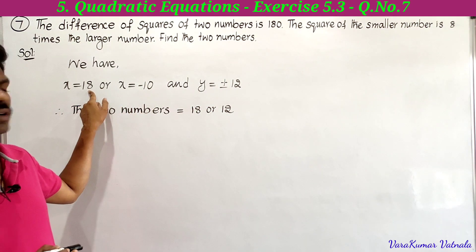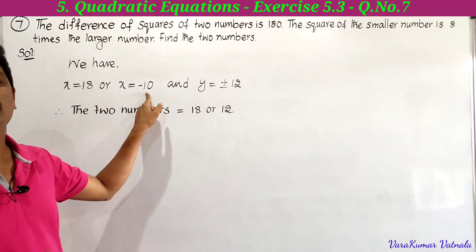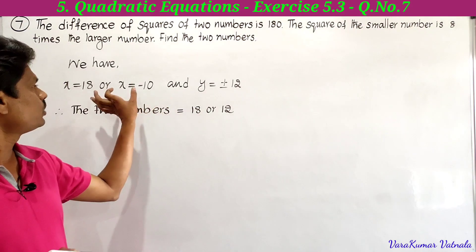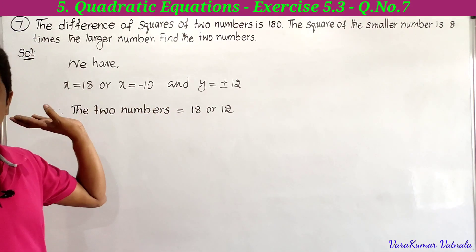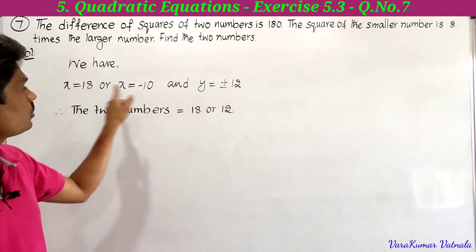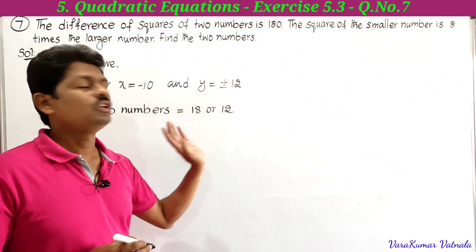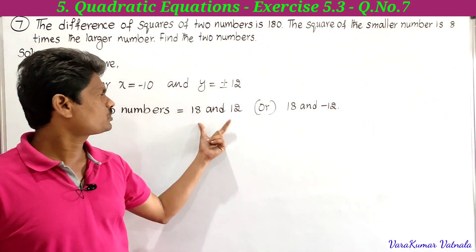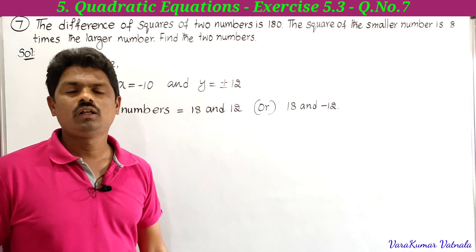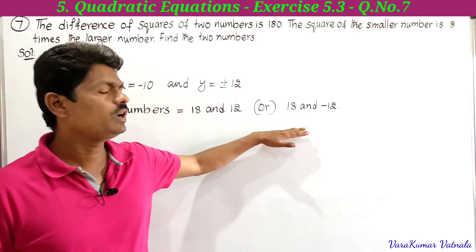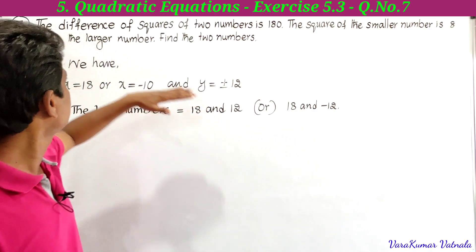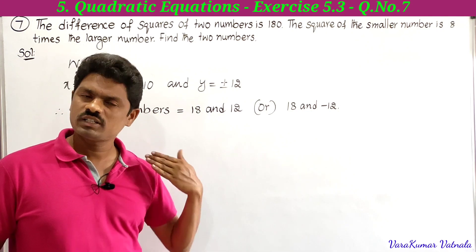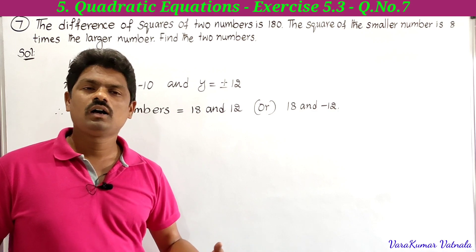We take x = 18 only, since x = −10 gives y² = −80 which is undefined. With x = 18 and y = ±12, the two numbers are 18 and 12, or 18 and −12. That completes the seventh problem of Exercise 5.3. We will continue with the next problem in the next class. Thanks for watching.